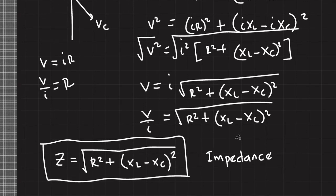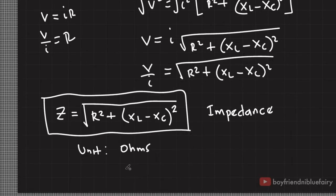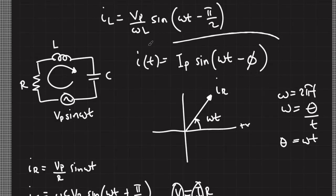The unit of impedance is Ohms. In DC circuits we have the concept of resistance, but in AC circuits we must consider the overall effects of resistance, inductive reactance, and capacitive reactance — we collectively call this impedance. From the peak voltage that comes from the AC source, dividing by impedance gives us the peak current: I sub P equals V sub P over Z. This is the current amplitude, which gives us the current flowing through the entire RLC series circuit when connected to an AC EMF source.